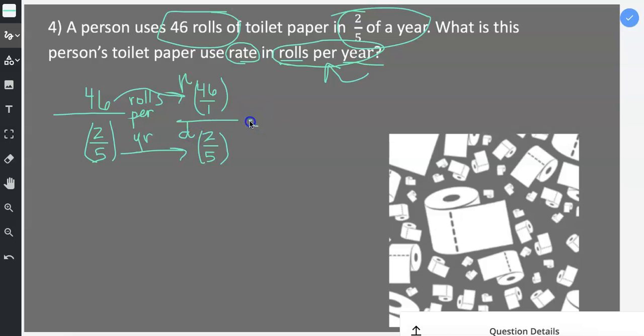Step two in solving a complex fraction, you record the numerator fraction first. So 46 over one is the numerator. Then the denominator fraction goes second. And this is the step where we trade out the fraction bar for a division symbol, basically a division symbol in another form because a fraction bar really means division.